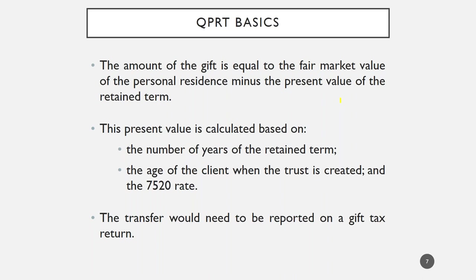This is a cost-benefit analysis you need to have with your client. The longer the retained term, the smaller the value of the remainder interest and therefore the smaller the gift. But the longer the retained term, the more likely it is that your client might die during the interim, and if that happens, the planning technique does not work. Because this is a gift of a future interest, the client will have to file a gift tax return when the gift is made to the trust.